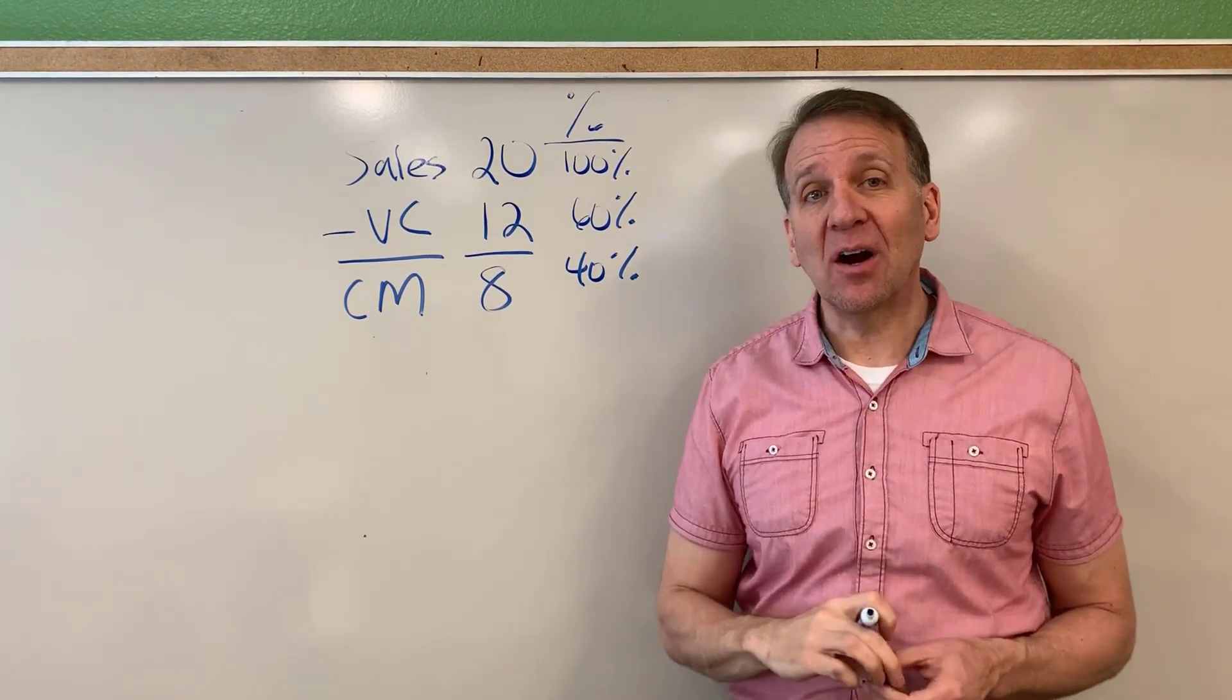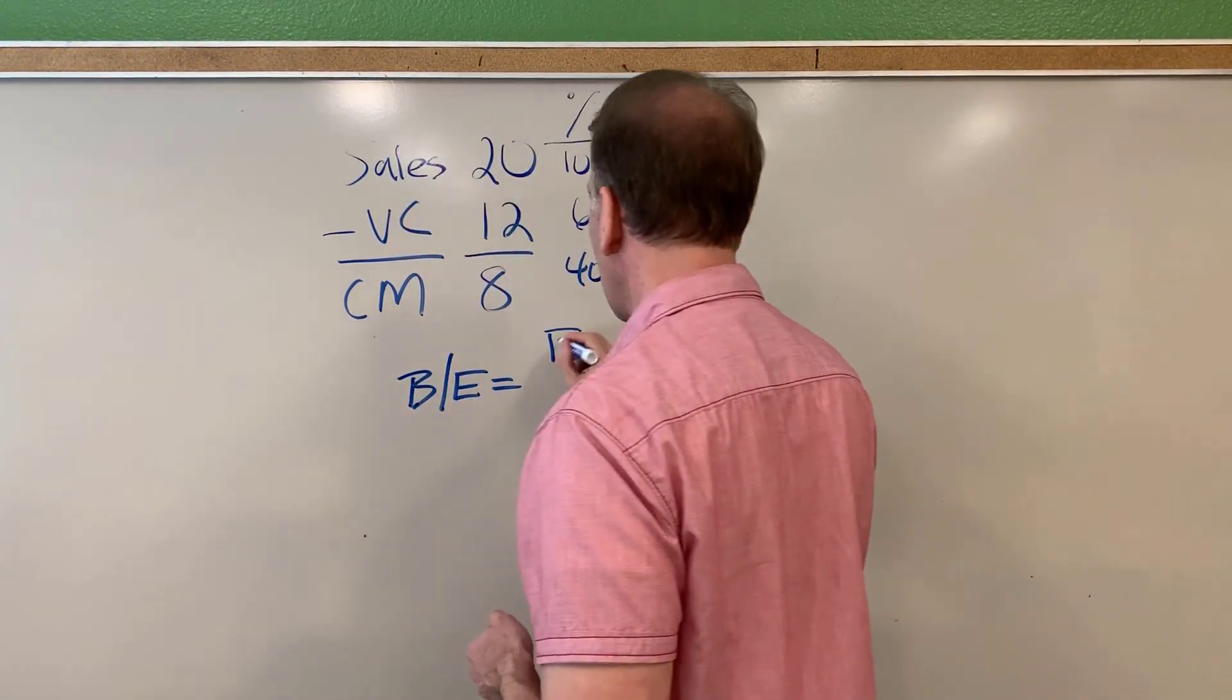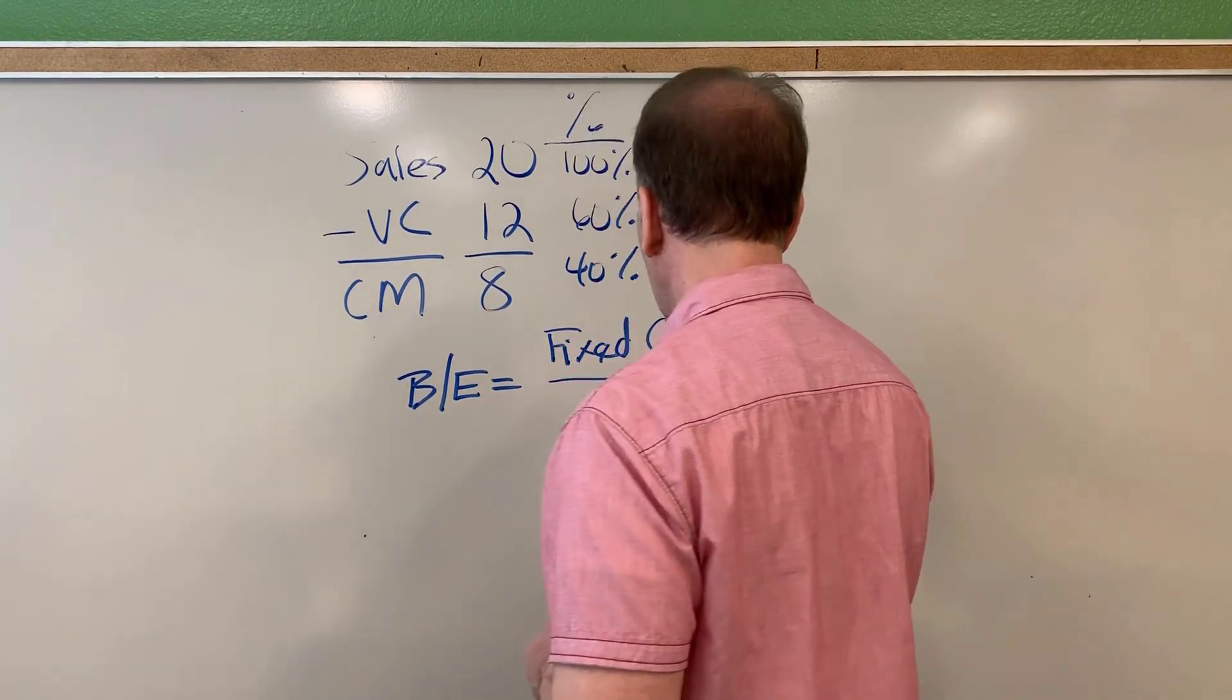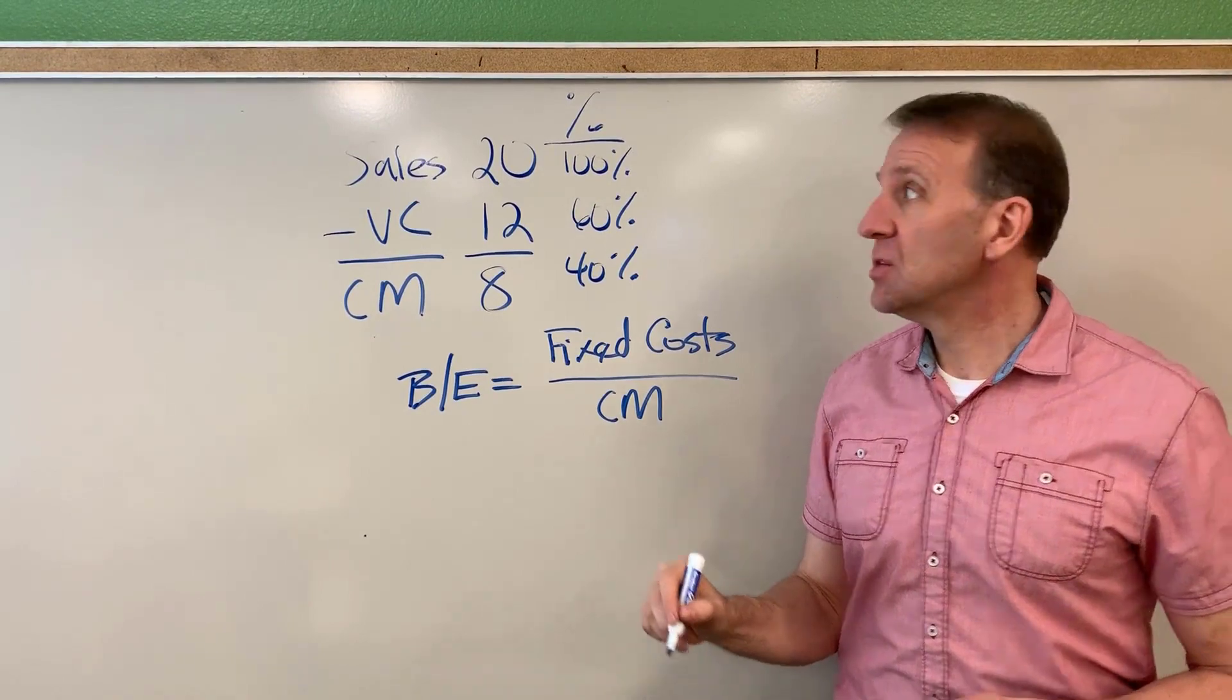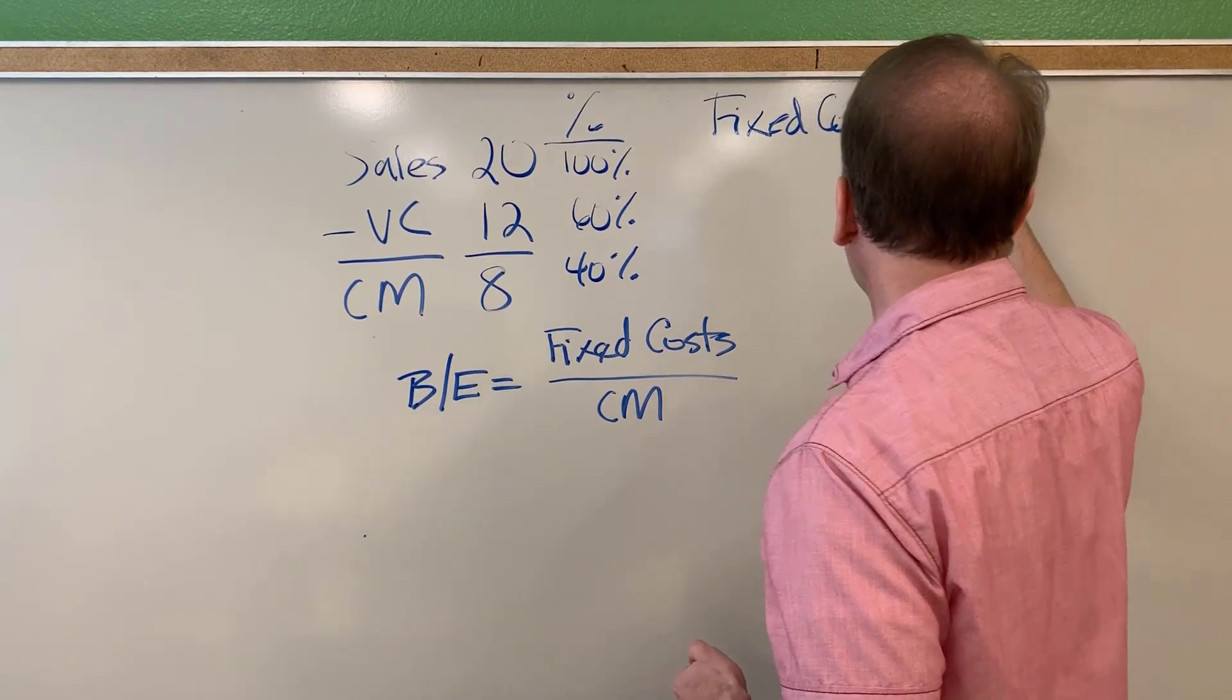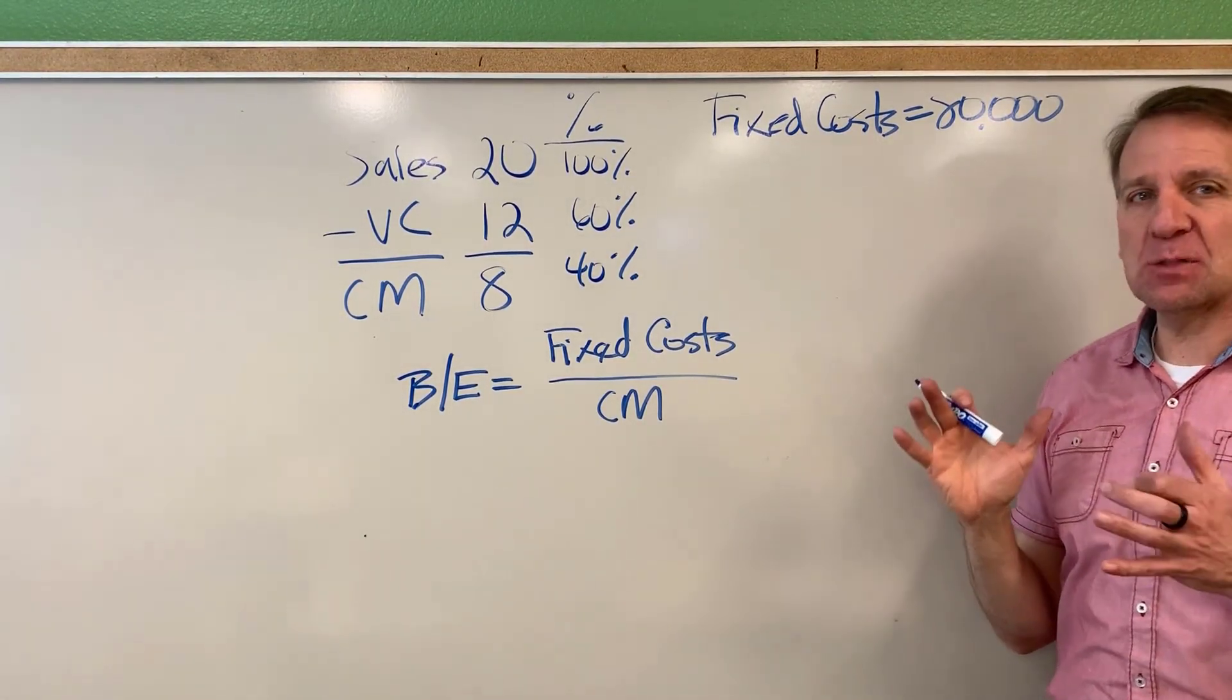Now we can calculate our breakeven. I'm just going to abbreviate here. Breakeven equals - this is called the shortcut approach - we take fixed costs divided by our contribution margin per unit. The problem will need to tell you what the fixed costs are if you're doing homework. The fixed costs in our example will be $80,000.